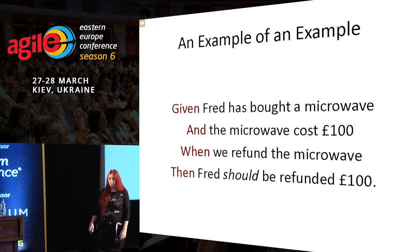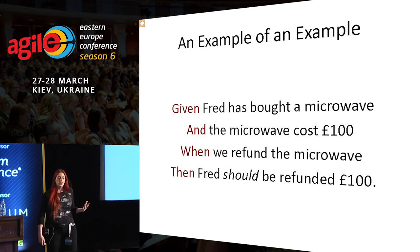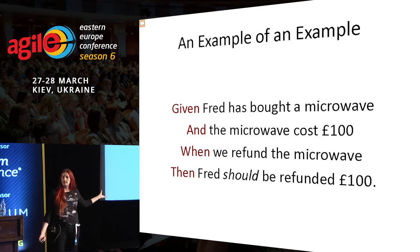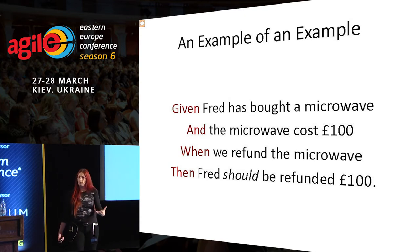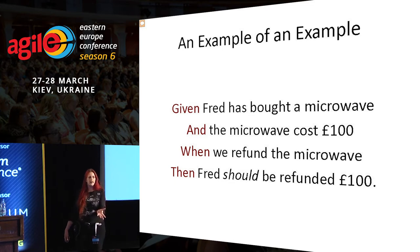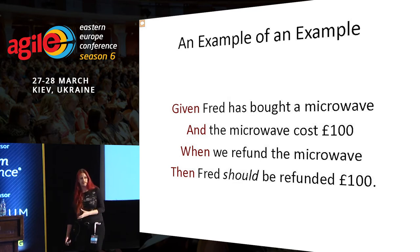Here's an example of an example. Given Fred bought a microwave and the microwave costs £100, when we refund the microwave, then Fred should be refunded £100. Really simple — I'm working in pounds because I'm English. You've all been into shops and got refunds before; you're familiar with this scenario. And you can imagine that if you had some till software, you could actually perform this with the till software, scanning in Fred's receipt and giving him his money back.